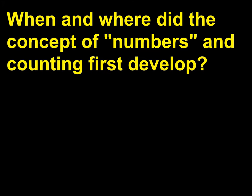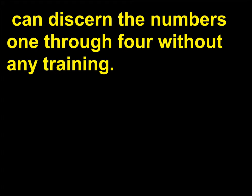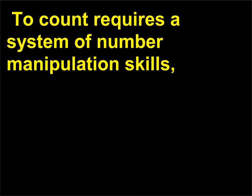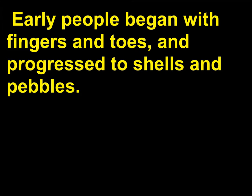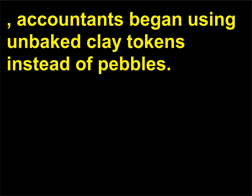When and where did the concept of numbers and counting first develop? The human adult, including some of the higher animals, can discern the numbers one through four without any training. After that, people must learn to count. To count requires a system of number manipulation skills, a scheme to name the numbers, and some way to record them. Early people began with fingers and toes, and progressed to shells and pebbles. In the fourth millennium BCE in Elam, near what is today Iran along the Persian Gulf, accountants began using unbaked clay tokens instead of pebbles.